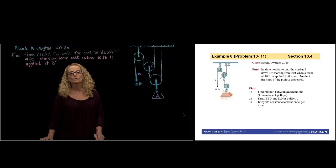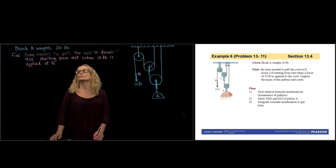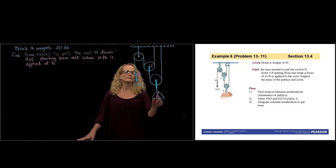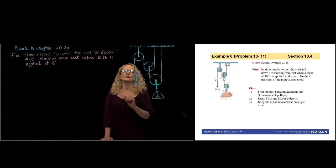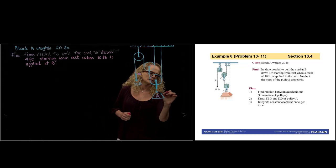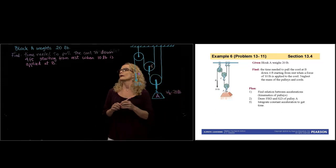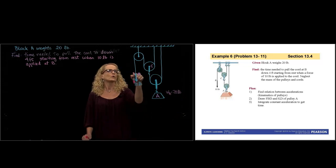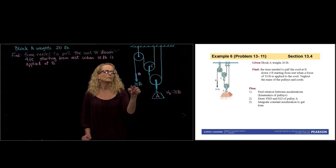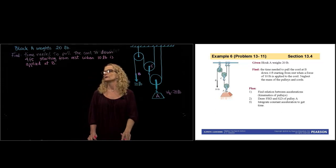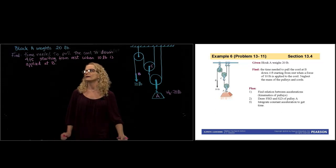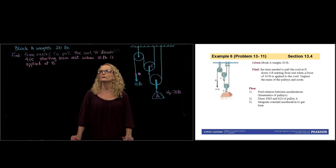Hi, this is example number six of section 13.4. We have a block A in a system of pulleys — three pulleys. The weight of A is 20 pounds, and we are pulling the cord at point B with a force of 10 pounds. We are asked to find the time needed to pull the cord at B down four feet.